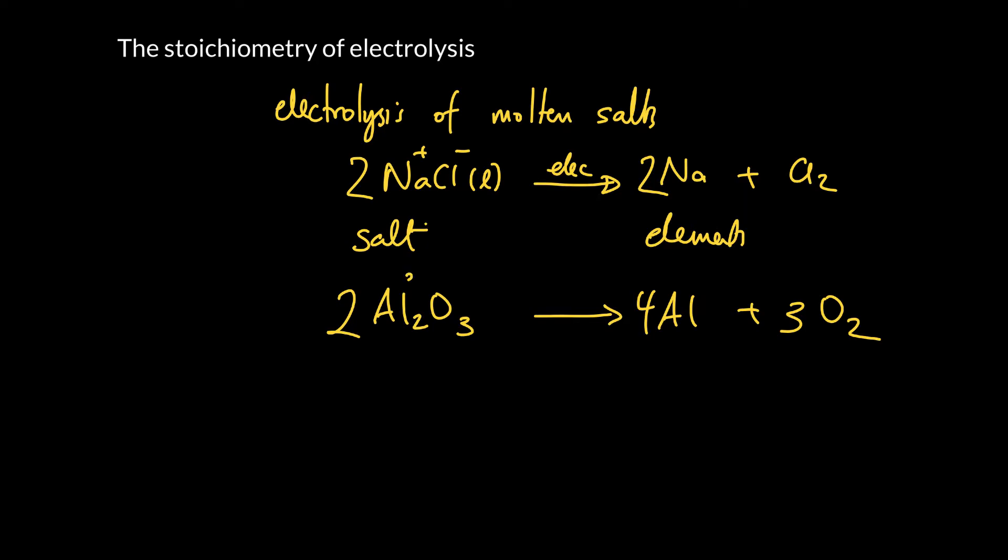So what's going on here is the aluminum is aluminum ions, 3 positive. The oxygen is oxide, 2 negative. And we're converting it to aluminum, 0. So that would be a loss of oxidation number, so that is reduction. And we're taking the oxygen and raising it in oxidation state from -2 to 0. So that is the oxidation process.